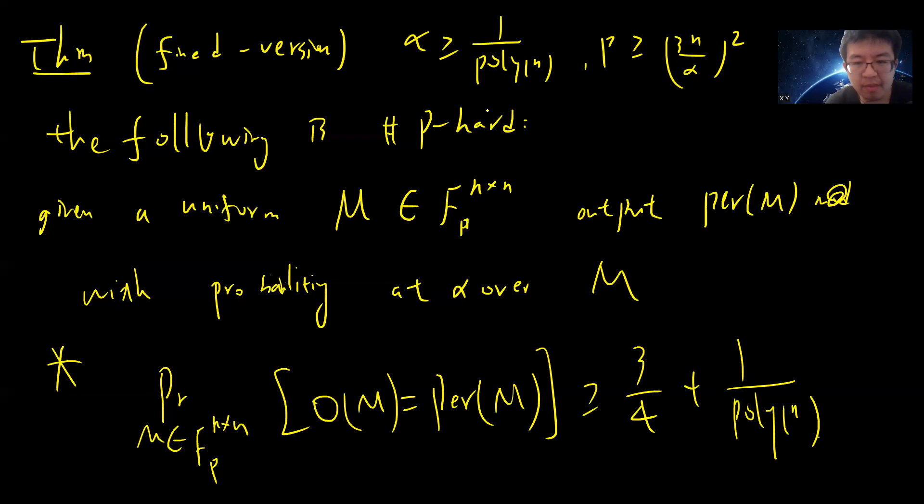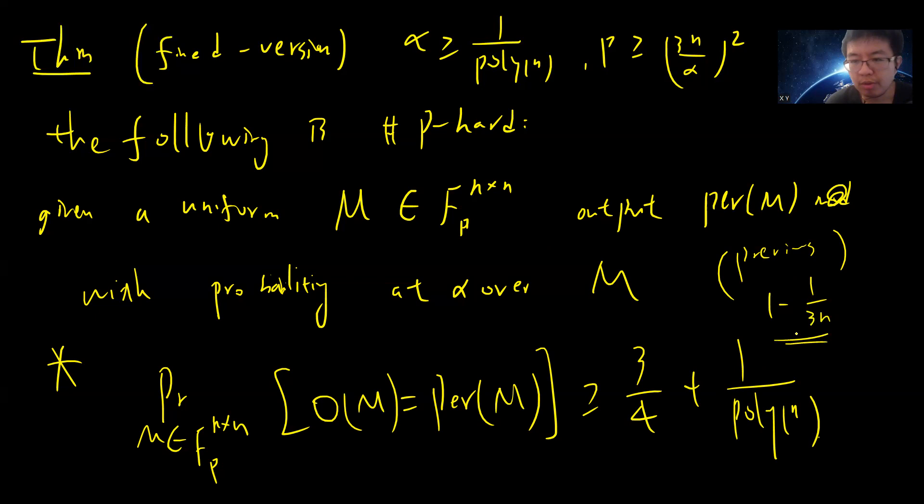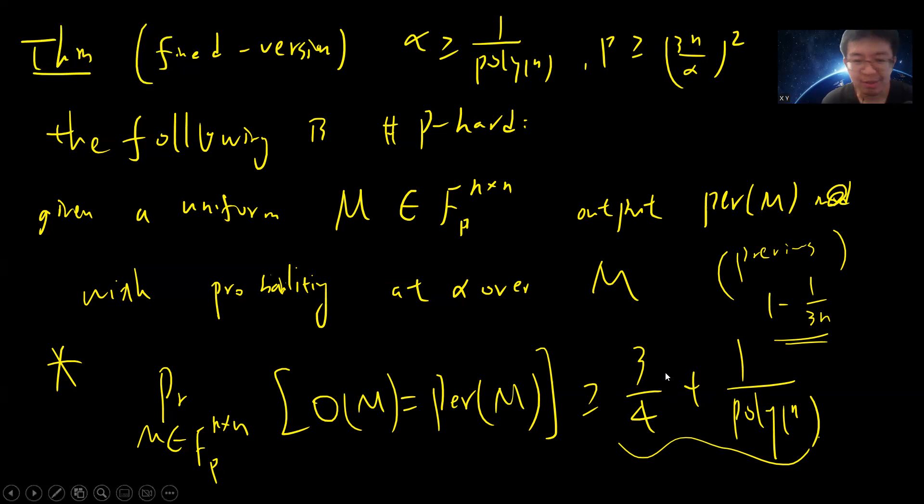Notice that the previous result I proved used probability 1 minus 1 divided by 3n. That is a weaker assumption. If you try to use the same proof technique on this weaker oracle (probability 3/4 + 1/poly(n)), you will definitely fail.